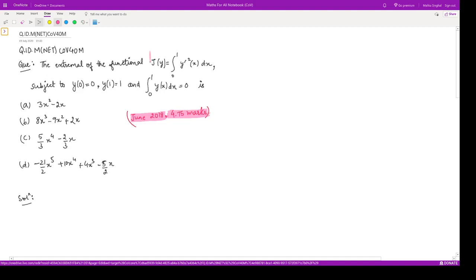In this question, you are given a functional and we have to find the extremal corresponding to this functional subject to these three conditions. We are given three conditions: y(0) = 0, y(1) = 1, and an additional functional is given to be 0.